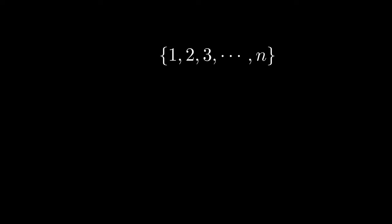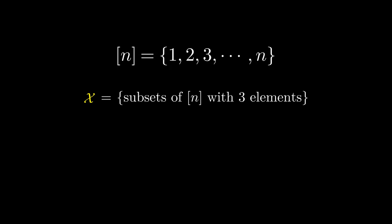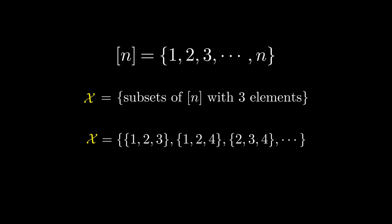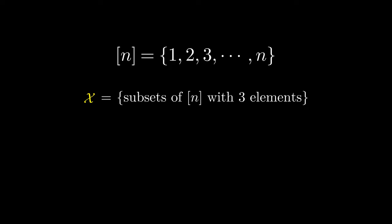Here is the set of positive integers up to n, which we will denote as n in brackets. From this set, we can make various classes of combinatorial objects, such as a class of all subsets of n with three elements. How many objects are in this combinatorial class? Let's write a function f of n to represent it. In this case, we merely choose three out of the n integers from the set, so the number of objects in this class is just n choose three.